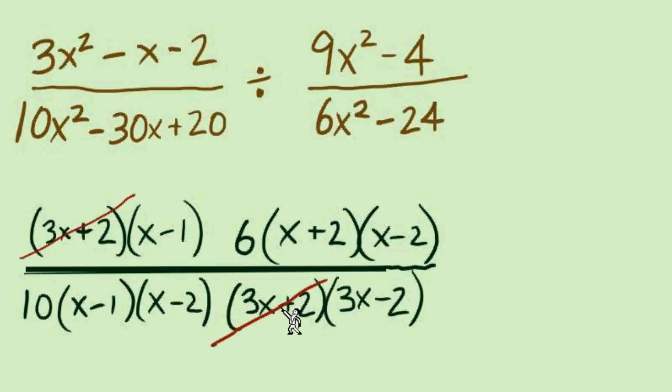So what do we have to cancel? 3x + 2 gone, the x - 1 is gone, x - 2 is gone. Something just feels great when all these different things cancel. What else can we cancel? There's these coefficients, the 6 with the 10.